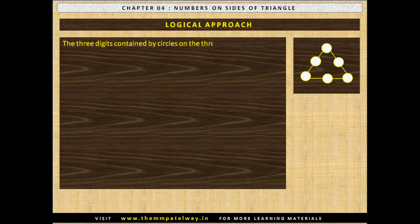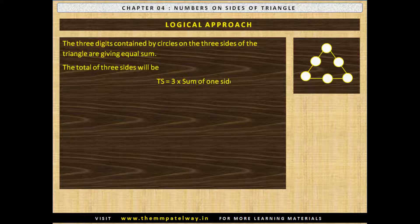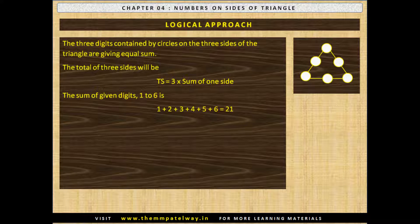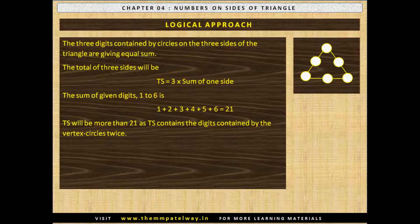The three digits contained by circles on the three sides of the triangle are given equal sum. The total of three sides will be Ts, that is 3 into sum of one side. The sum of given digits 1 to 6 is 1+2+3+4+5+6 equals 21. It is natural that Ts will be more than 21 as Ts contains the digits in the vertex circles twice. Therefore, the difference between Ts and 21 will be equal to the sum of the vertex circle digits.